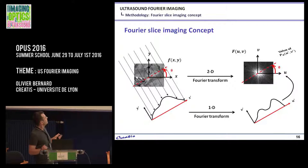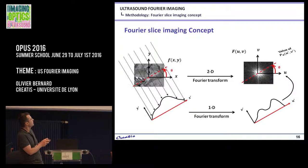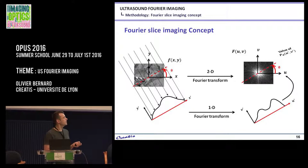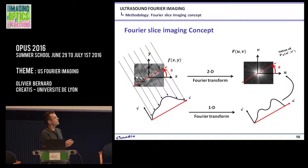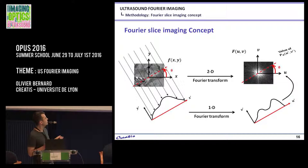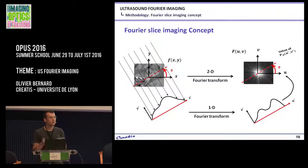If you integrate the image information perpendicular to a given direction with angle theta, this value corresponds to the integration of the image along that segment — you get a 1D signal. If you do the 1D Fourier transform of this signal, it corresponds exactly to the 2D Fourier spectrum of the image restricted along the line with the same theta angle.